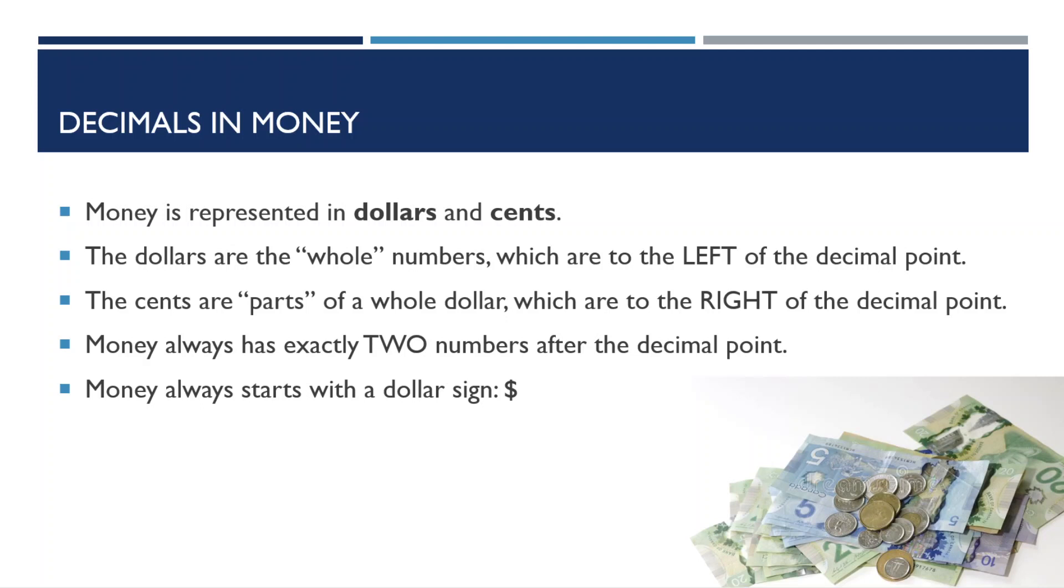Decimals are especially important for working with money. If you haven't yet, I'd recommend you also check out our video about Canadian money to familiarize yourself with different coins and bills. Money is represented in dollars and cents. The dollars are the whole numbers, which are to the left of the decimal point. The cents are parts of a whole dollar, which are to the right of the decimal point. Remember that money always has exactly two numbers after the decimal point, and money always starts with a dollar sign.